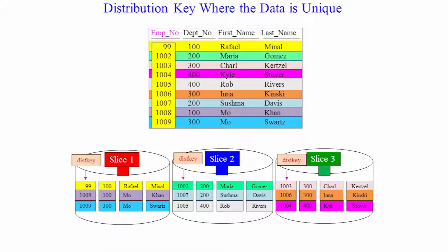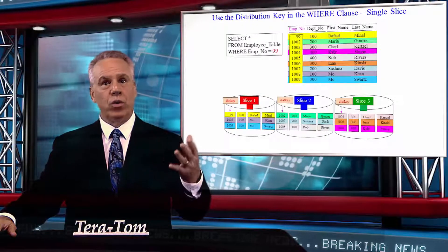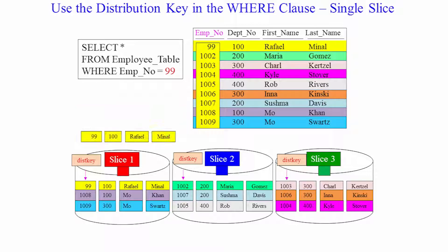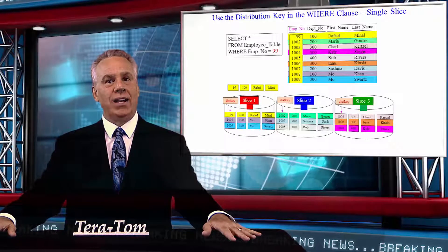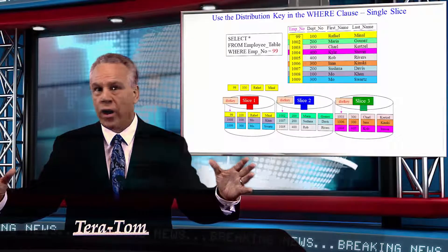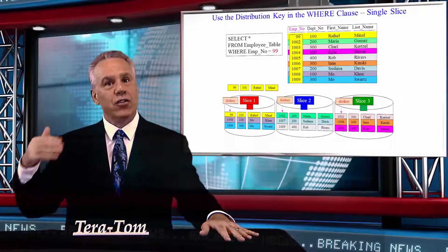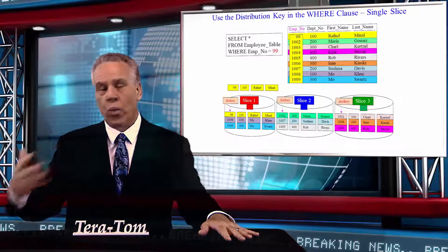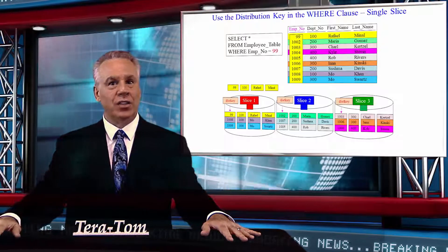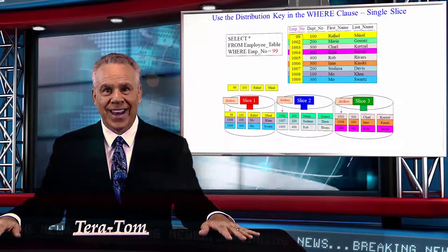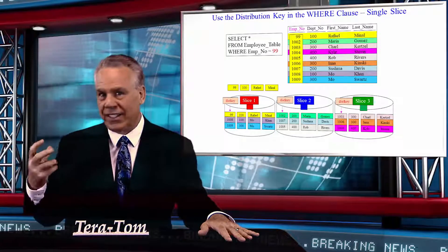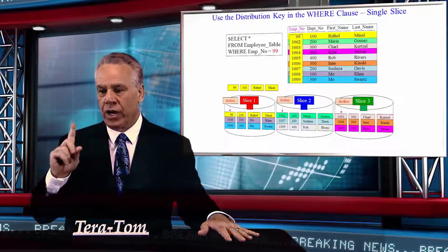The beauty of that is if you say select everything where the employee is equal to 99, they know exactly which slice that's on. The idea behind a distribution key is: A, it'll spread the data for you automatically, and B, if you use that column in your WHERE clause of the SQL, it is a single slice retrieval because they just run the formula again and reverse-engineer exactly where that data is. That's very, very clever.